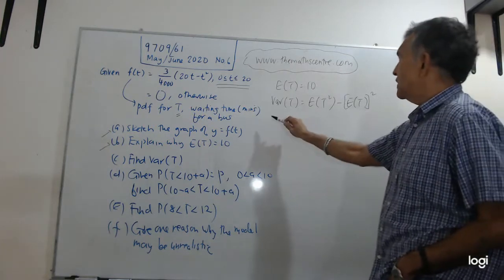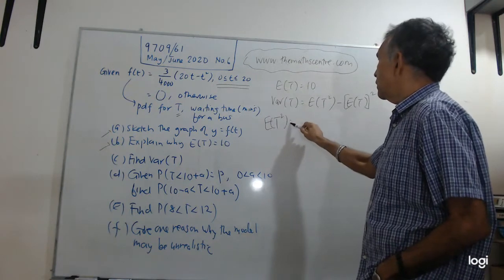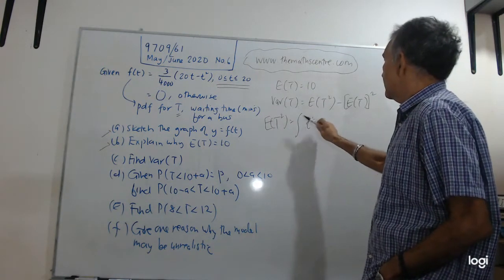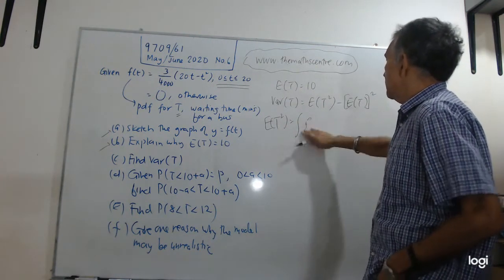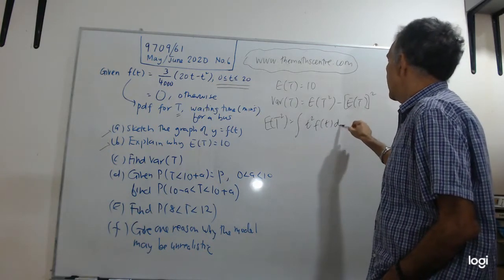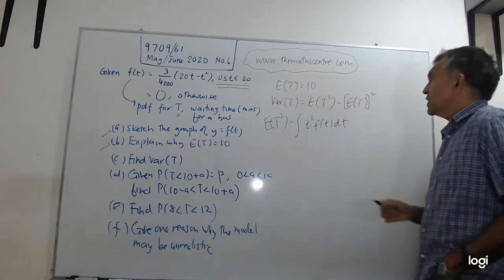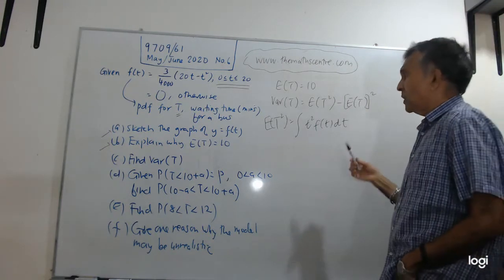So what we are left with is we have expected value of T, we need to find the expected value of T squared. Let me set it up. The expected value of T squared will be T squared f(t) dt, that's the expected value of T squared.